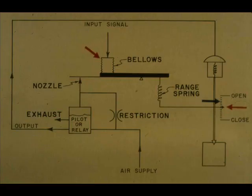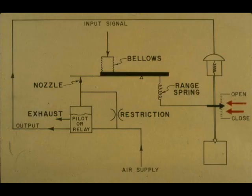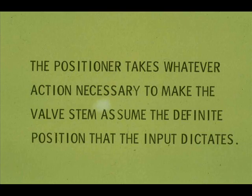Balance is restored, but the valve is at a different position and the input bellows has a different pressure. For each pressure applied to the input bellows, there is a definite position the control valve stem must assume to restore balance. The positioner makes the control valve assume that definite position, or applies full force or zero force in an effort to do so.